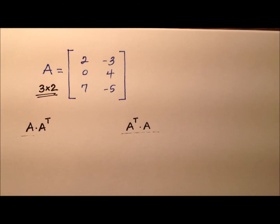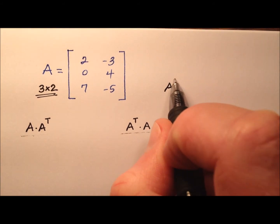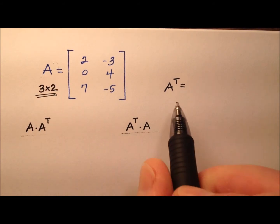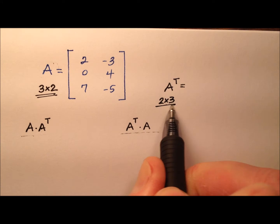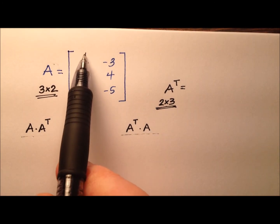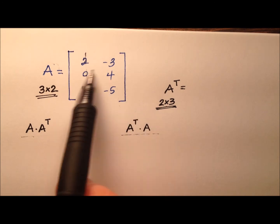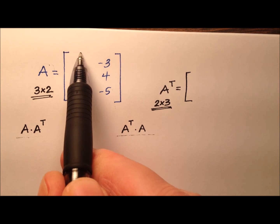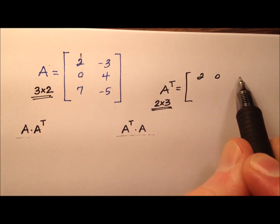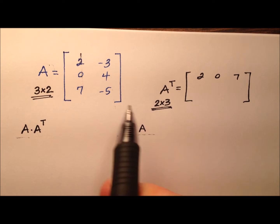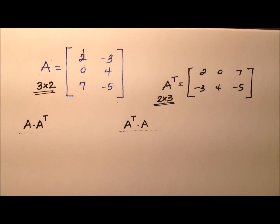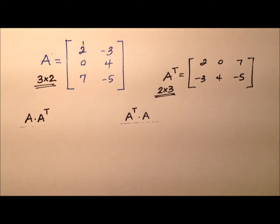The first thing we need to do is find the transpose of A. Since matrix A is a three by two, the transpose will be a two by three. All of the columns become rows — you're just flipping things around. So we make the first column into the first row: two, zero, seven. And the second column becomes the second row. That gives us A and the transpose of A.